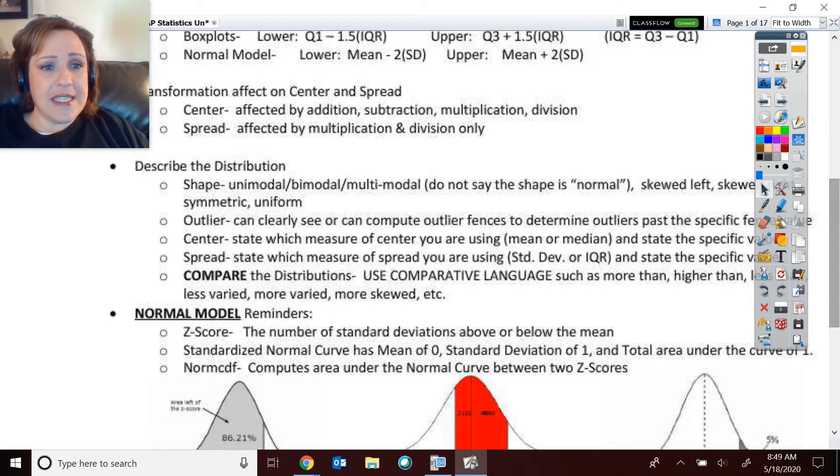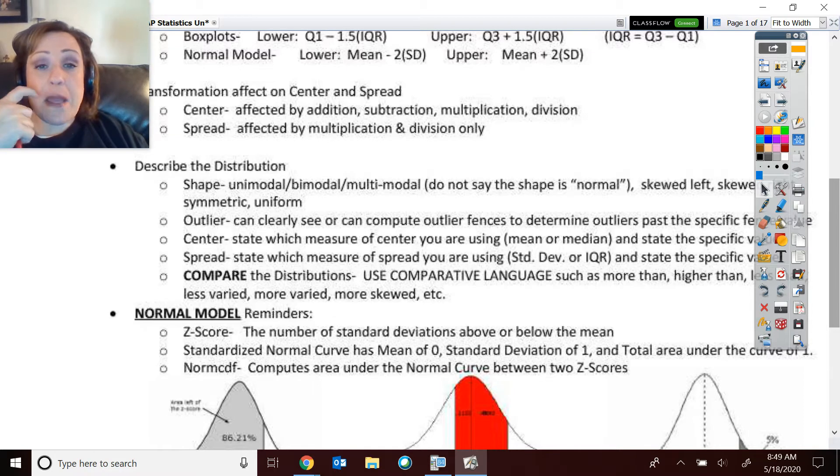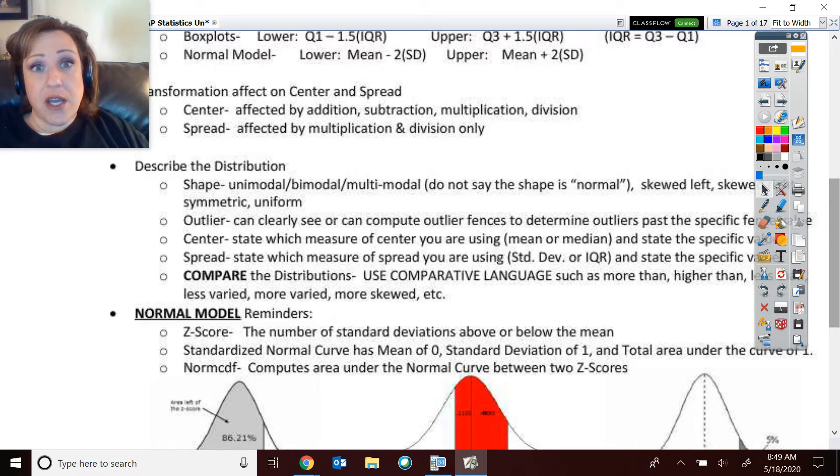And how the mean, median, and mode compare to their shape as well. The outlier rules, how transformations just affect the addition and subtraction affects center, your mean and medians, and only multiplication and division affect your spread. Describe the distribution: your shape, outlier, center, and spread. But make sure if they compare two distributions, which I could see them getting a lot of bang for your buck on an AP FRQ, make sure you use comparative language: higher than, this one's more than, less than. And be specific on what those values are, that they're mean, medians, or whatever.